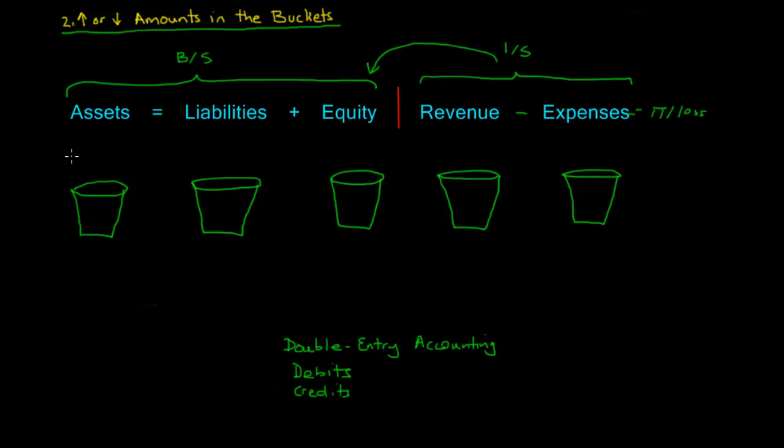In fact, from an asset perspective, when things are added to the bucket or increase the amount in an asset account, we call that a debit, and we abbreviate it with this DR. And when things come out of the asset, or decrease it, they are credits. So here it's a plus and a minus.